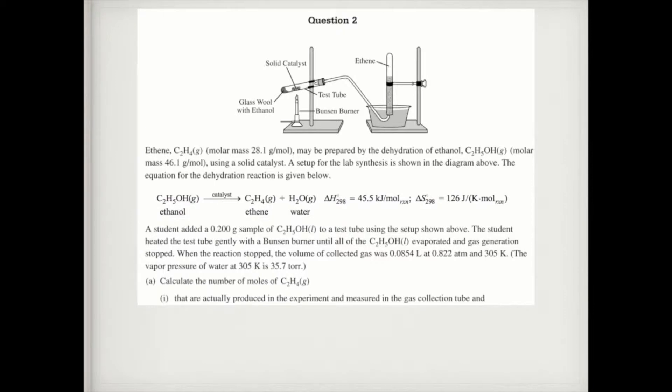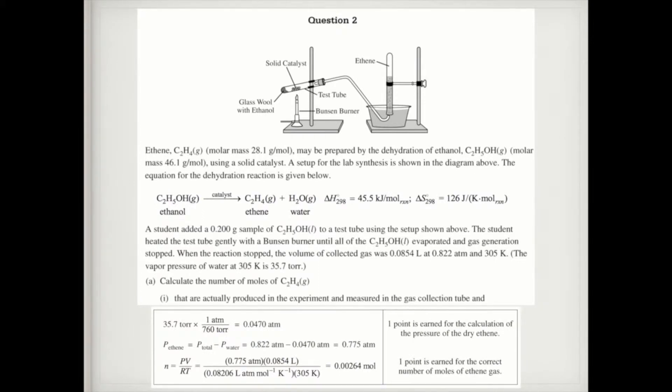Calculate the number of moles of C2H4 that are actually produced in the experiment and measured in the gas collection tube. First, the pressure of ethene is going to equal the total pressure minus the pressure of water. Make sure you're converting from torr to atmospheres because the two pressures are in different units. They take the total pressure, 0.822 atmospheres, and subtract the vapor pressure of water. Now you can use PV = nRT. You know the pressure, volume, R, and temperature, so you can solve for moles. You got one point for finding the pressure of just the ethene by subtracting, and one point for the moles of ethene.